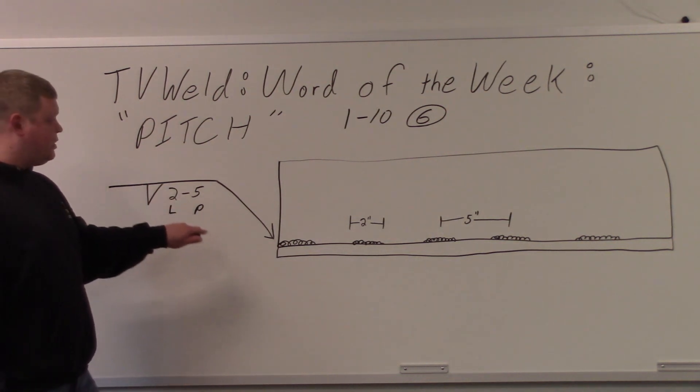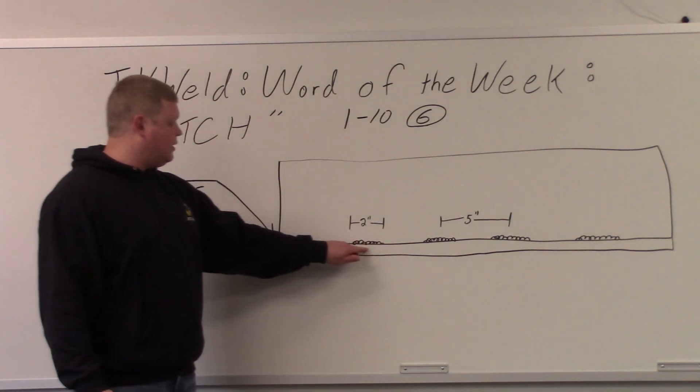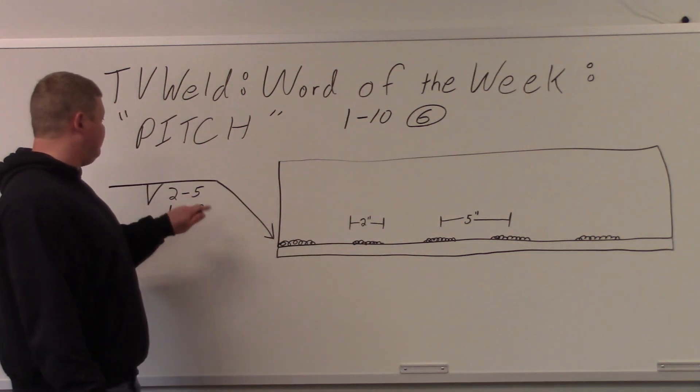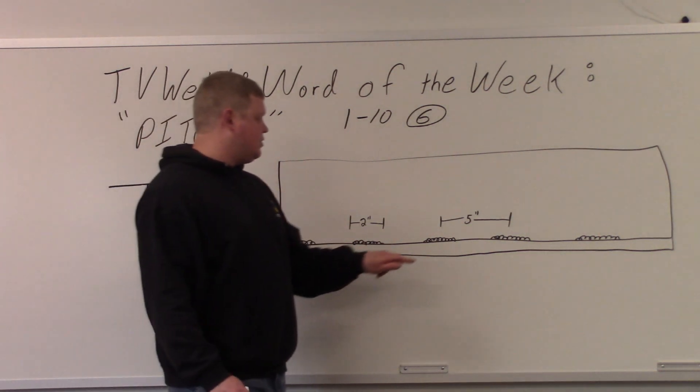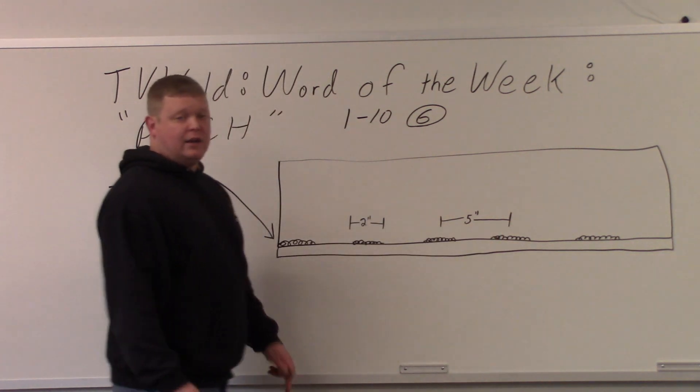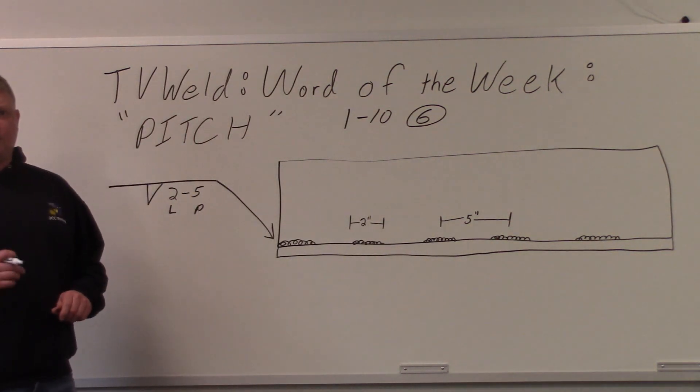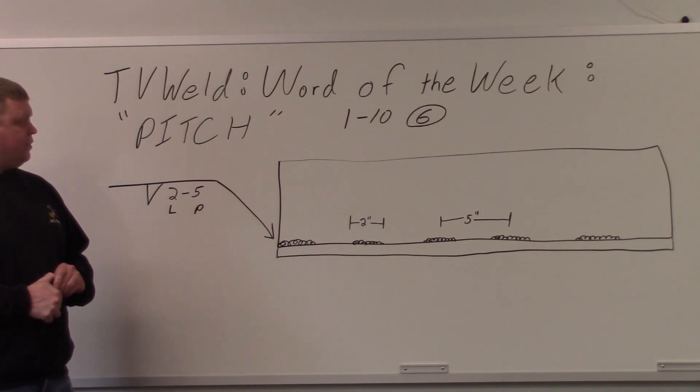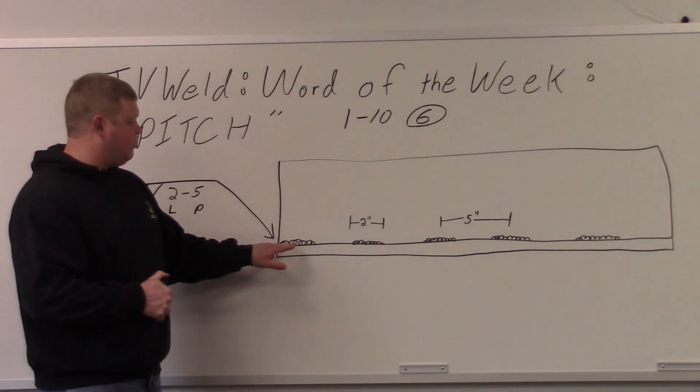This is saying the length of the weld is 2 inches. So right here. The length of the weld is 2 inches and the 5 is the pitch. So 5 inches would be the center to center distance between the welds. Again, center to center is very important to remember when you're dealing with pitch.